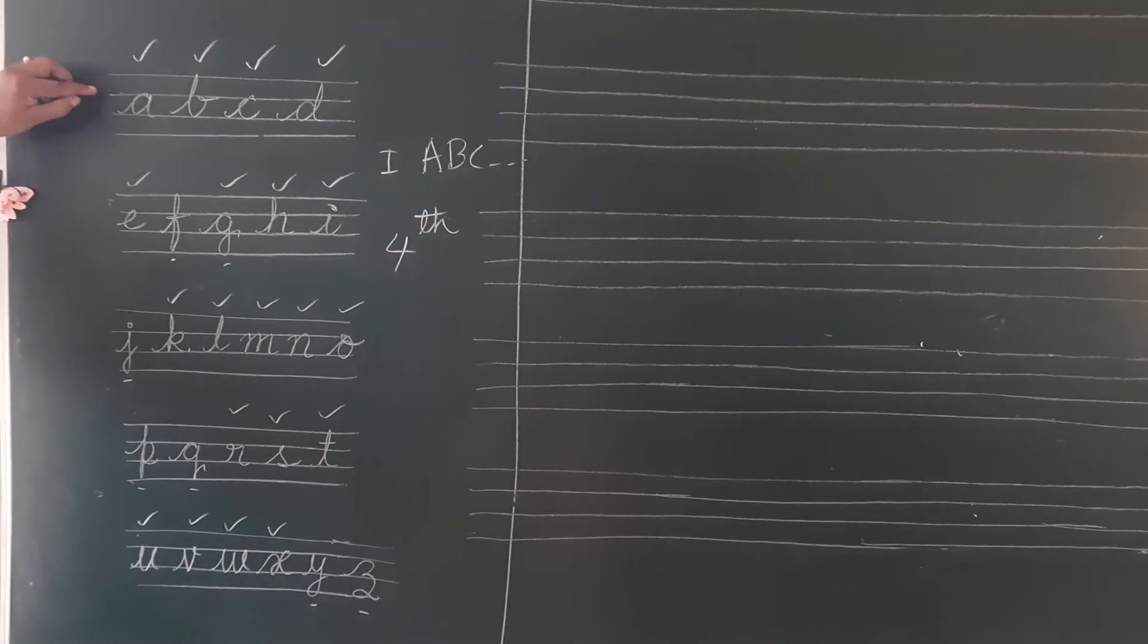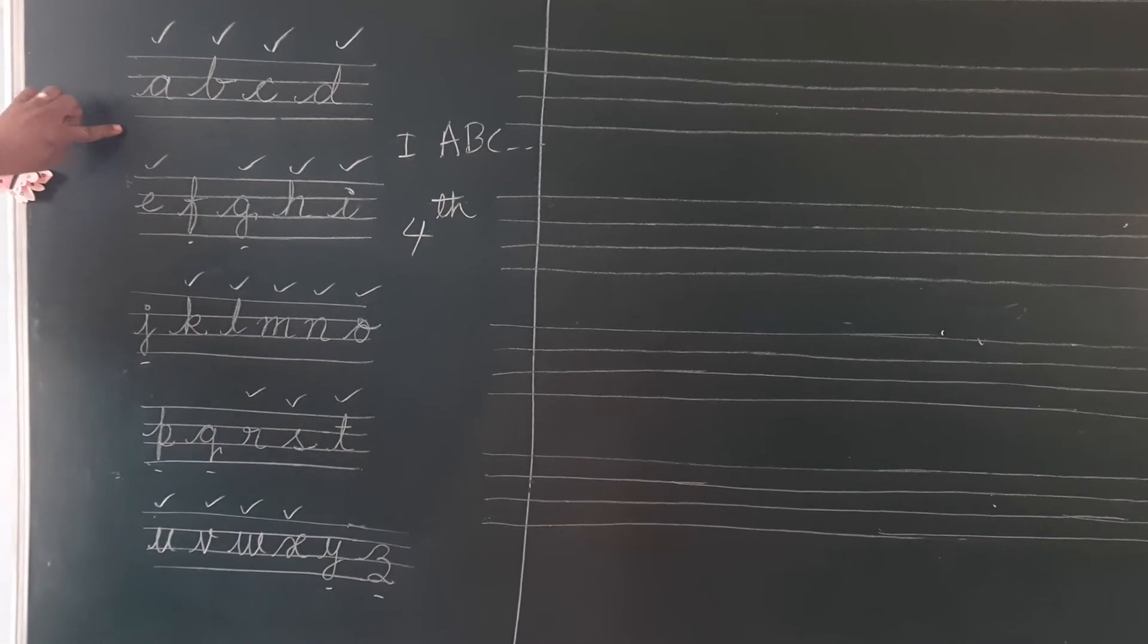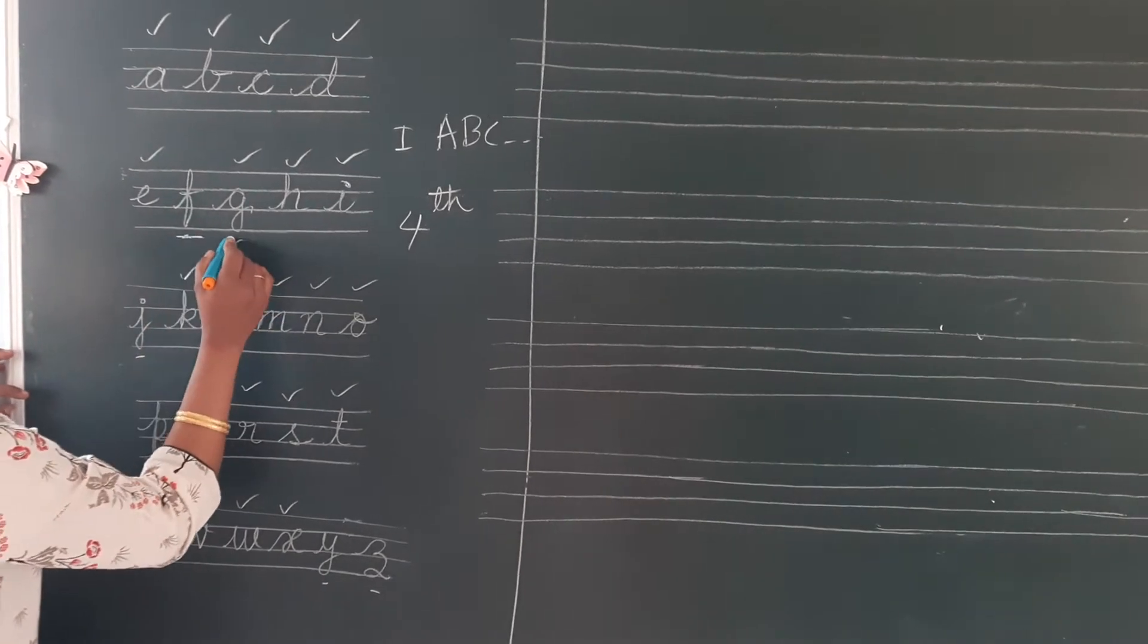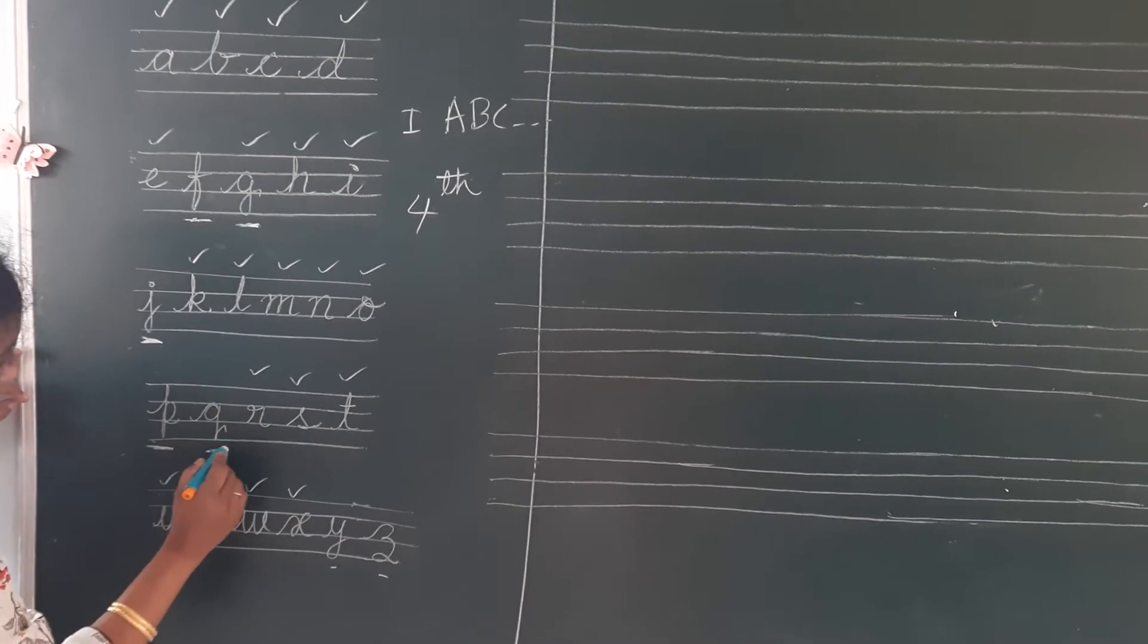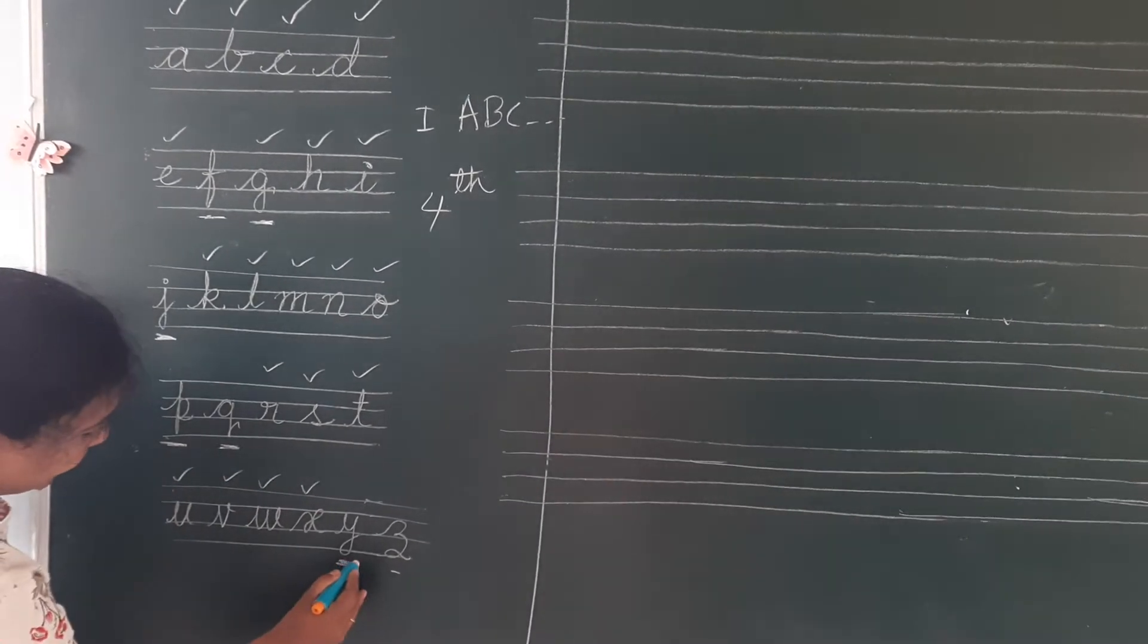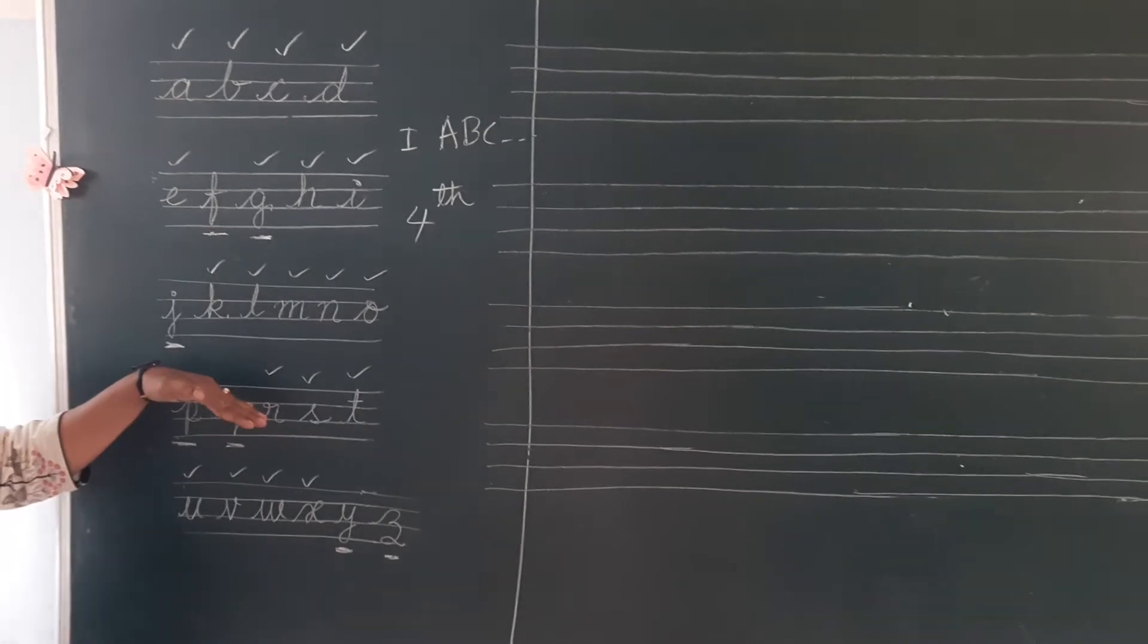What are the lowercase letters? Lowercase letters means first, second line, third line and the fourth line. What are those? F, G, J, P, Q, Y and Z. These letters are called lowercase letters.